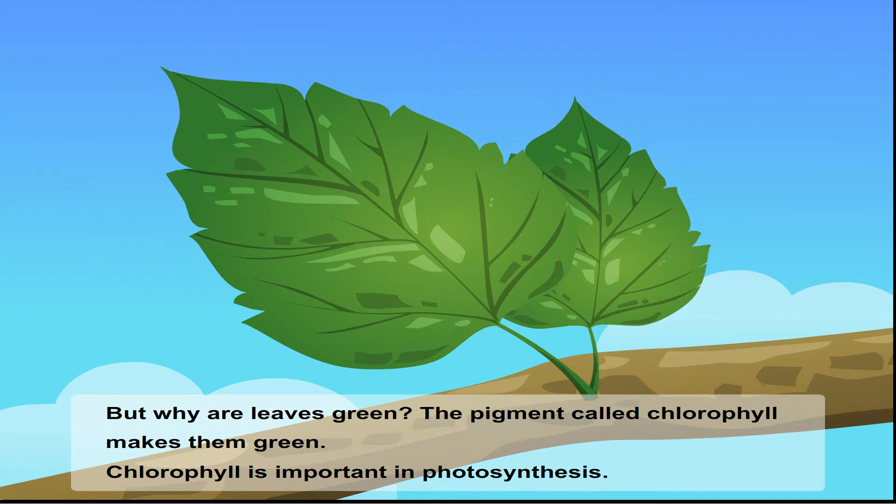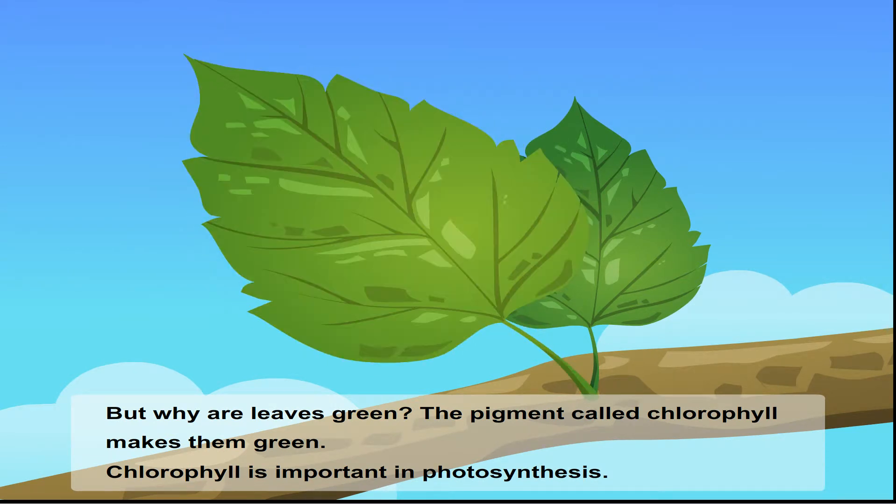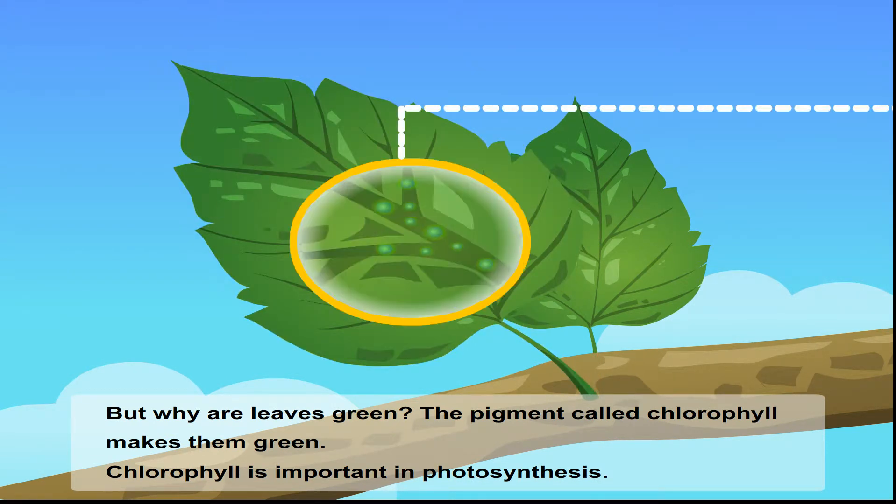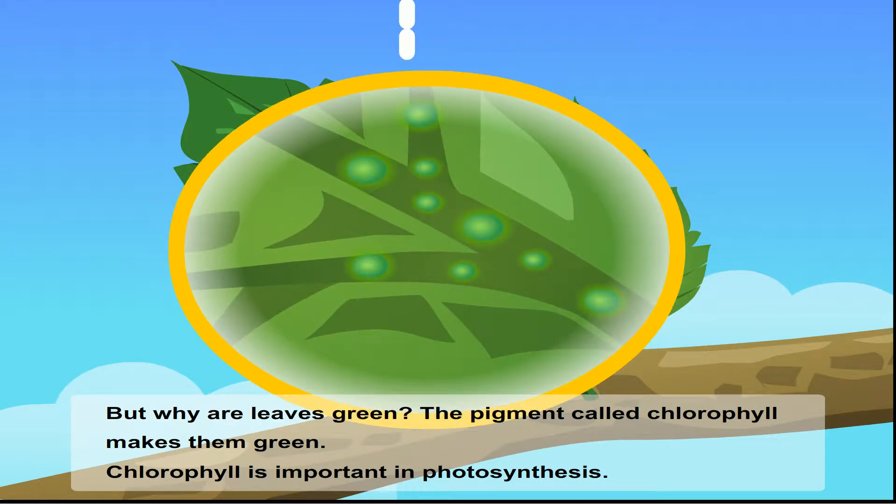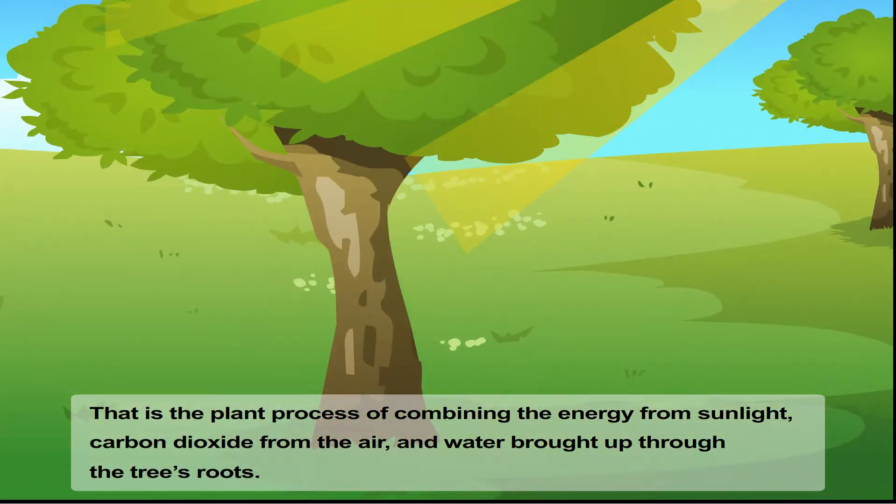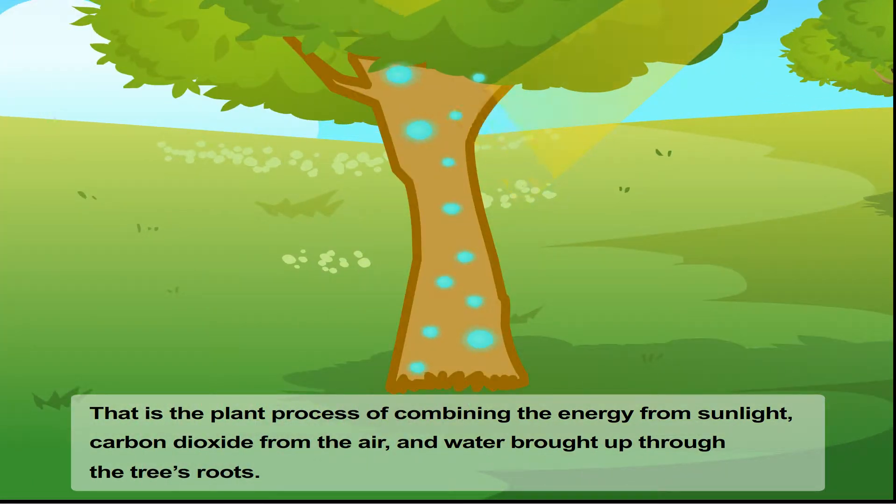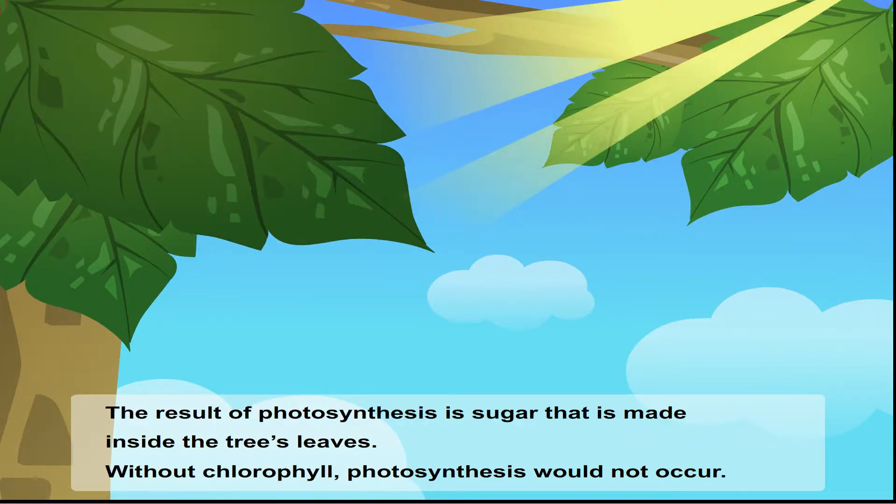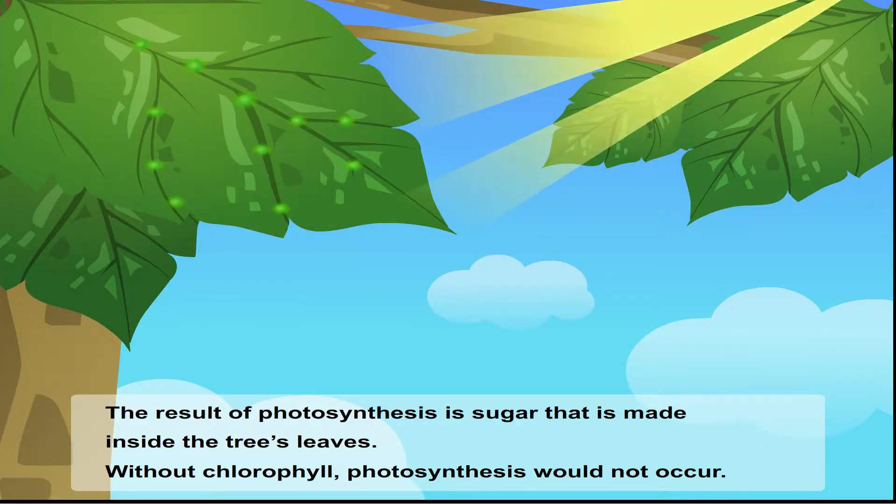But why are leaves green? The pigment called chlorophyll makes them green. Chlorophyll is important to photosynthesis. That is the plant process of combining the energy from sunlight, carbon dioxide from the air and water brought up through the tree's roots. The result of photosynthesis is sugar that is made inside the tree's leaves.